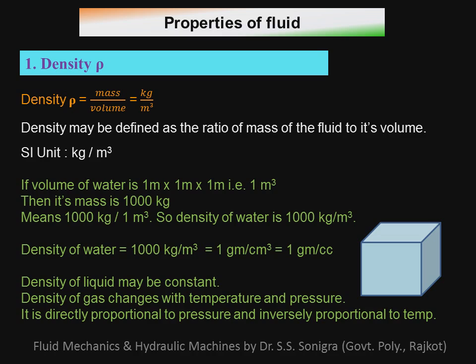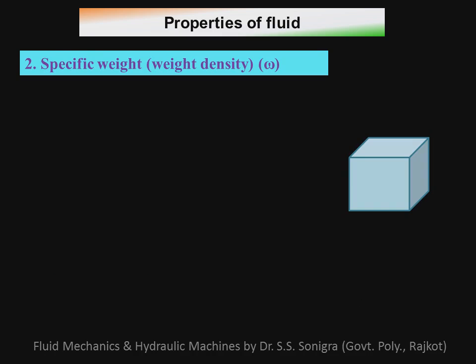The density of liquid may be constant, but the density of gas changes with respect to temperature and pressure. It is directly proportional to pressure — if we increase the pressure, density will increase — and it is inversely proportional to temperature, meaning if we increase the temperature of a gas, its density will reduce.